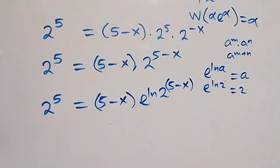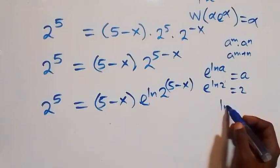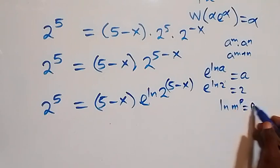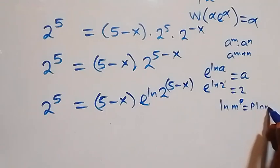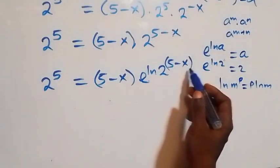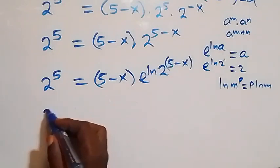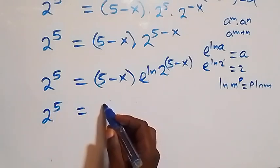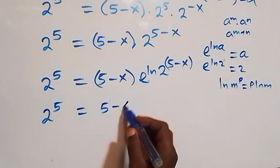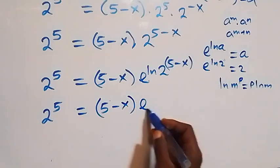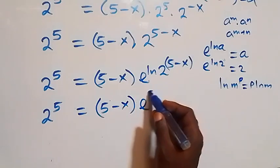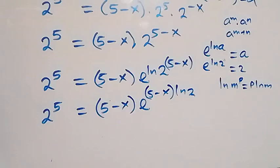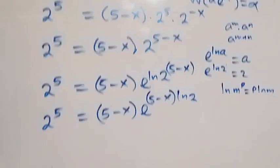On the right side we have 5 minus x multiplied by e raised to power ln 2, raised to power 5 minus x. Then from the power rule of logarithms, when we have ln m raised to power p, this is the same as p times ln m. So 5 minus x can come to the front, giving us 2 raised to power 5 equals 5 minus x times e raised to power 5 minus x times ln 2.